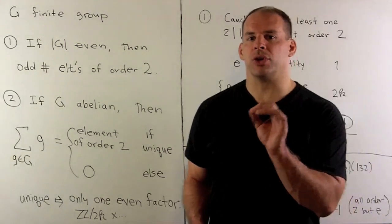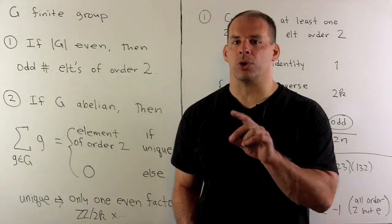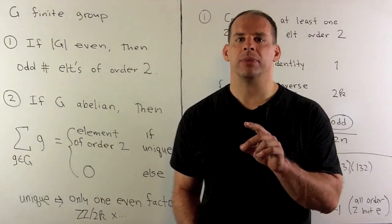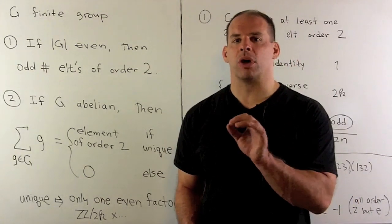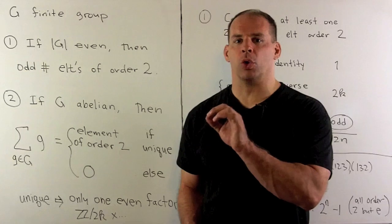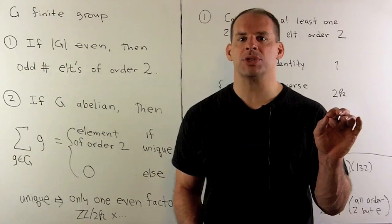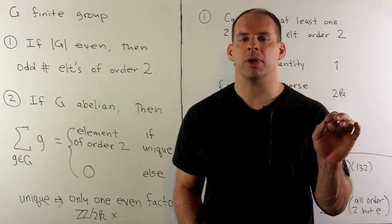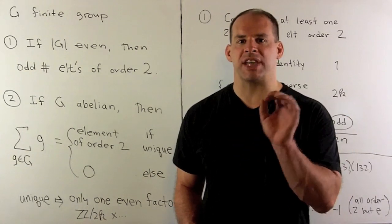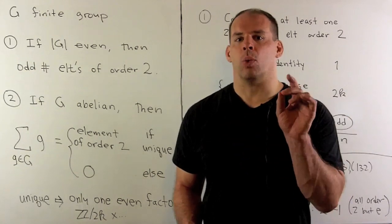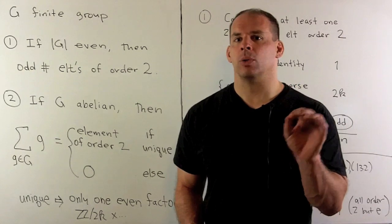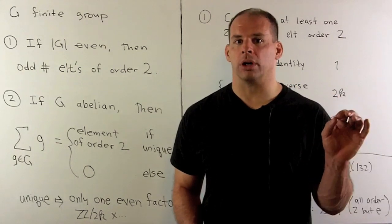Now, when is there a unique element of order 2? If we write our finite abelian group as a product of cyclic groups, we'll have to have exactly one factor with even order.